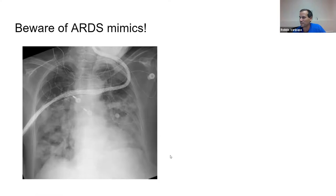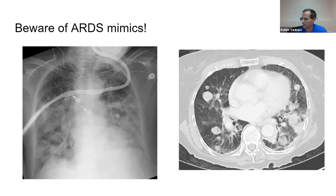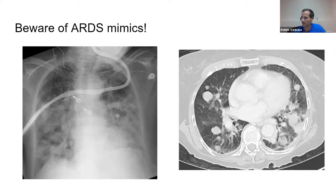Be cautious about ARDS mimics, because the definition requires excluding other things such as atelectasis or nodules. You might look at a radiograph of someone on high oxygen and say it looks like ARDS, but on closer inspection the opacities appear nodular and diffuse. The CT scan may show diffuse cannonball metastatic disease with nodular lesions — this would be metastatic cancer, not ARDS, but it could look like ARDS on a plain film. Beware of mimics because they won't be treated the same way.